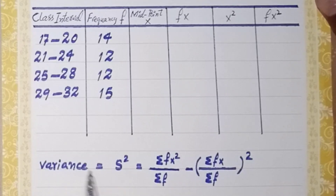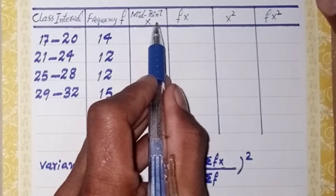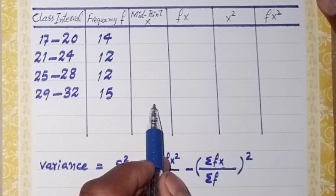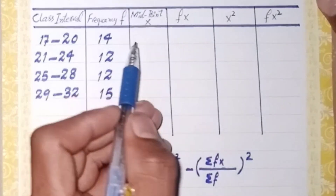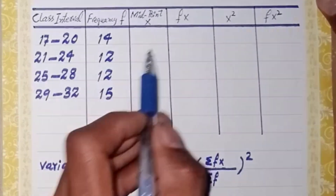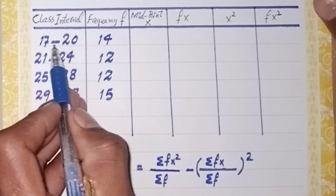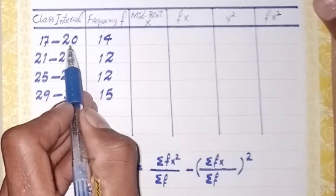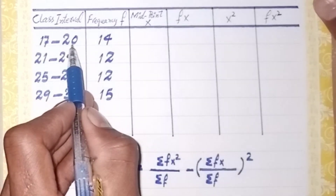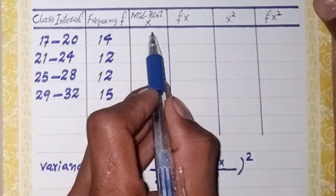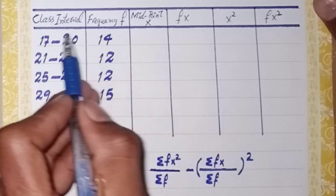First of all, we find the midpoint for each class interval. It is very simple — we calculate the midpoint by adding the upper and lower limit of that class interval and dividing by 2, to calculate the midpoint for each class interval.